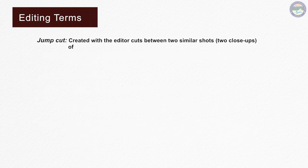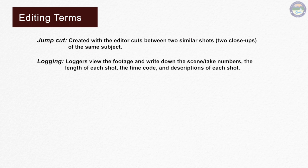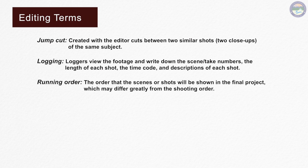Jump cut is created when the editor cuts between two similar shots of the same subject. Logging is when loggers view the footage and write down the scene, take numbers, the length of each shot, the time code and descriptions of each shot. Running order is the order that the scenes will be shown in the final project, which may differ greatly from the shooting order.